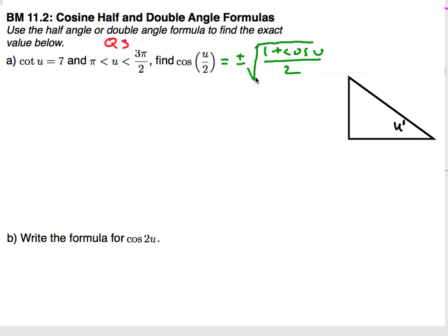I've written the half-angle formula here, but before we do that, let's set up our reference triangle and find our sides. Cotangent of u is 7, which means the adjacent to hypotenuse. I'm sorry, opposite. Cotangent is adjacent over opposite. And then I'll use the Pythagorean theorem, 1 squared plus 7 squared.